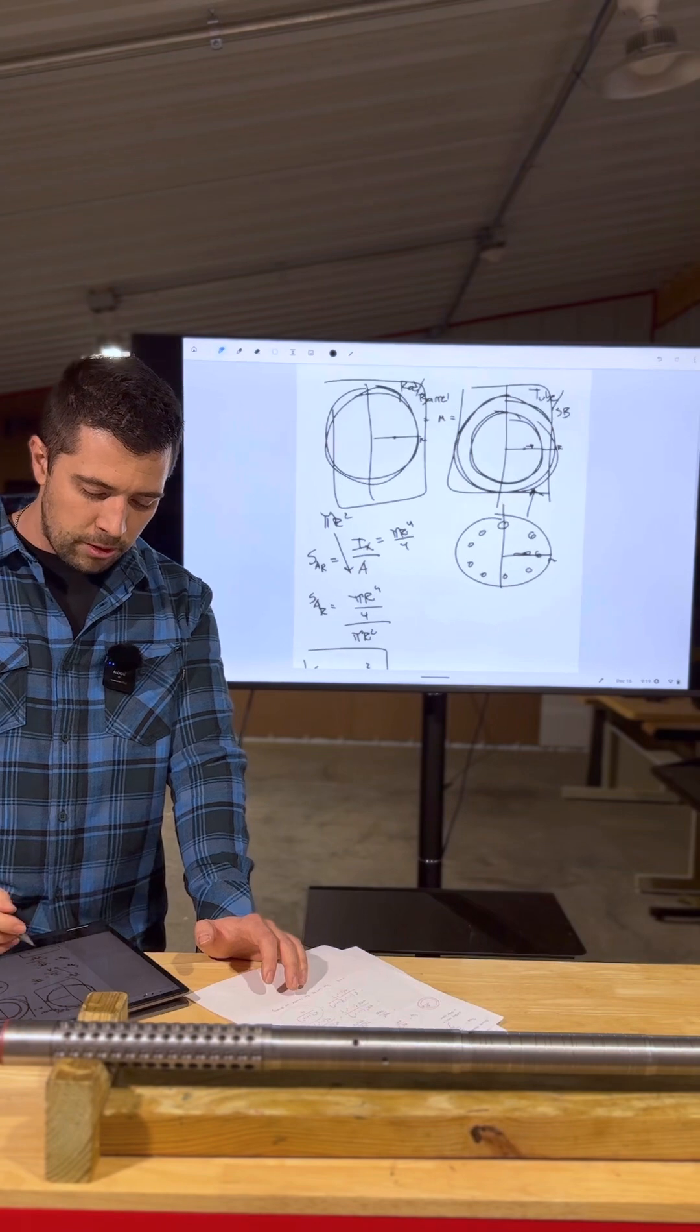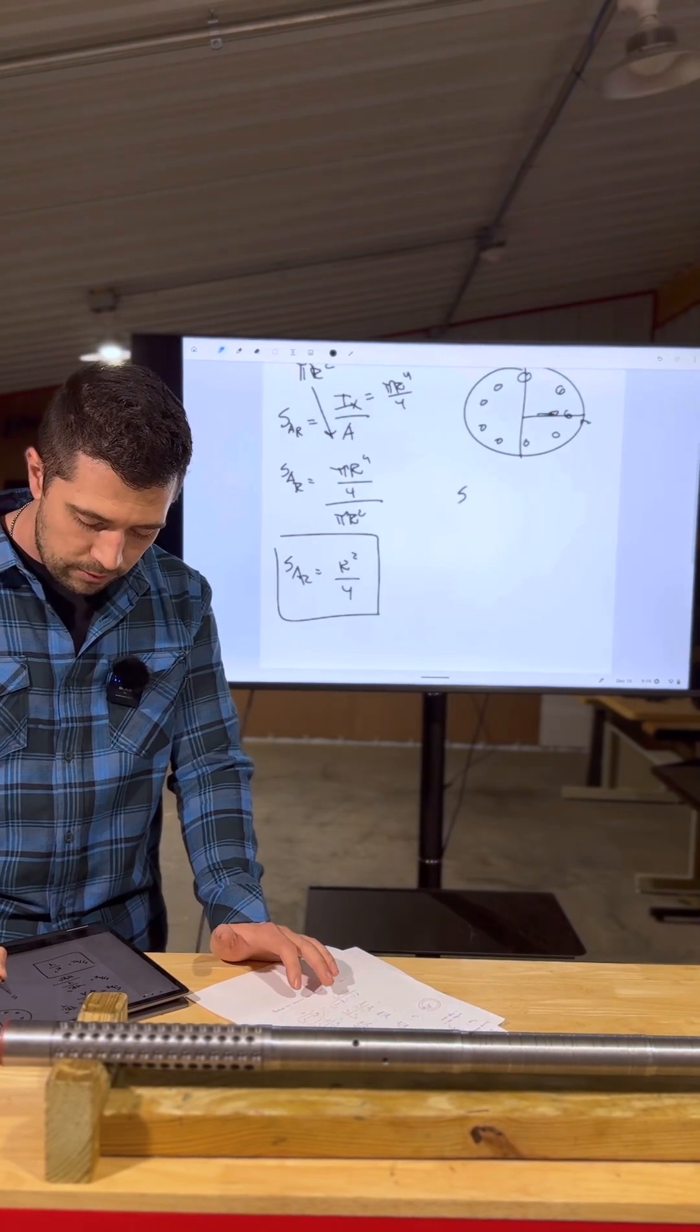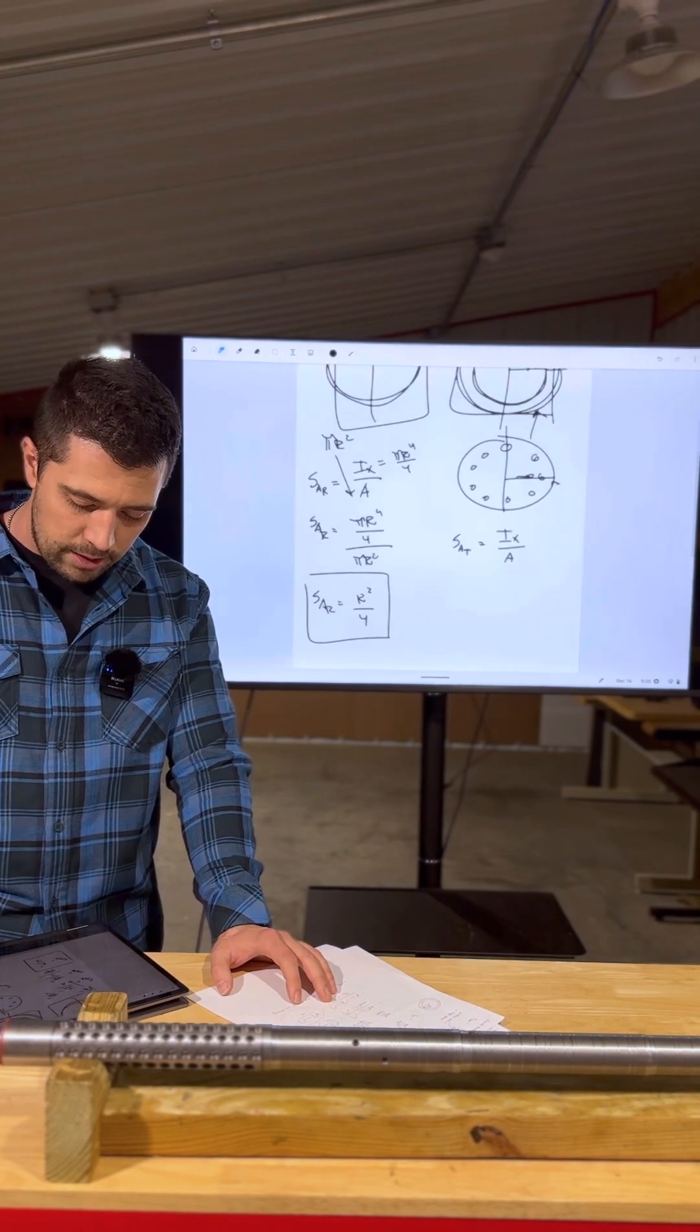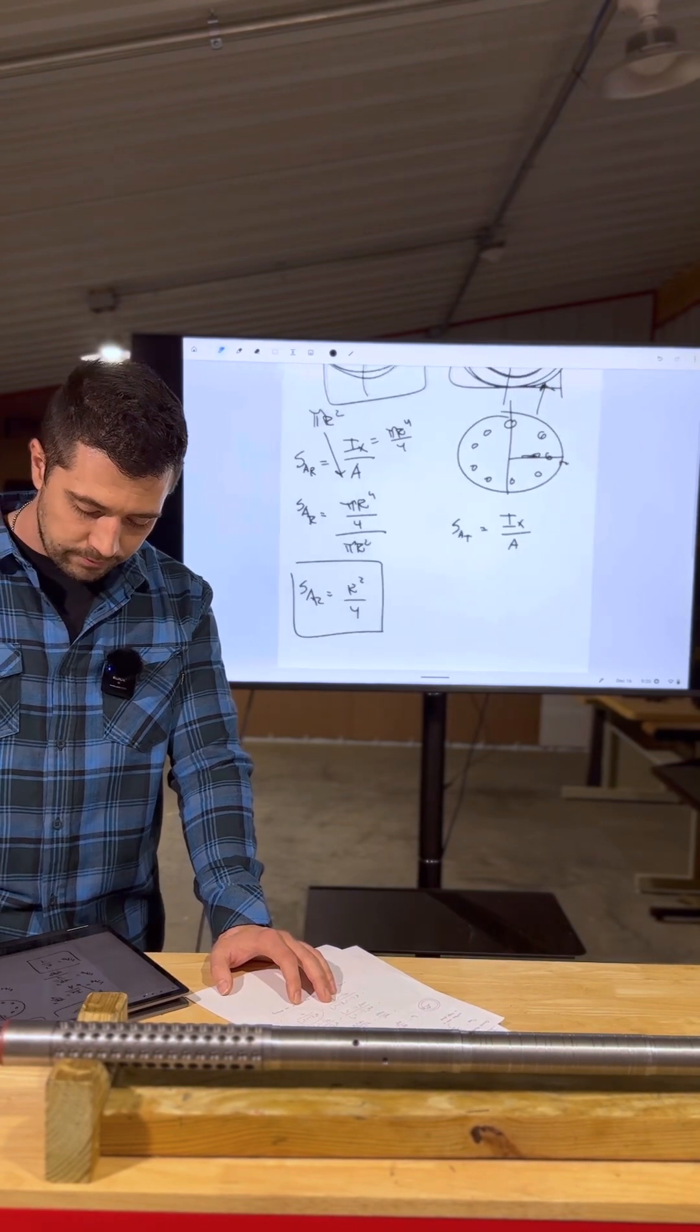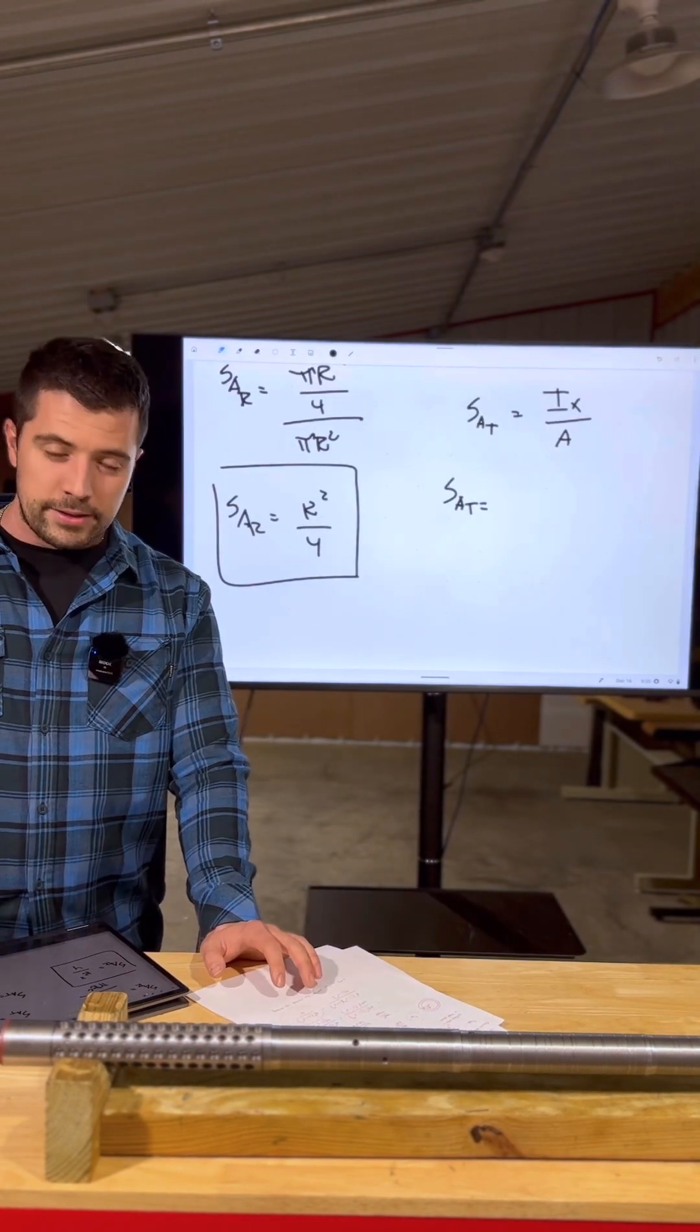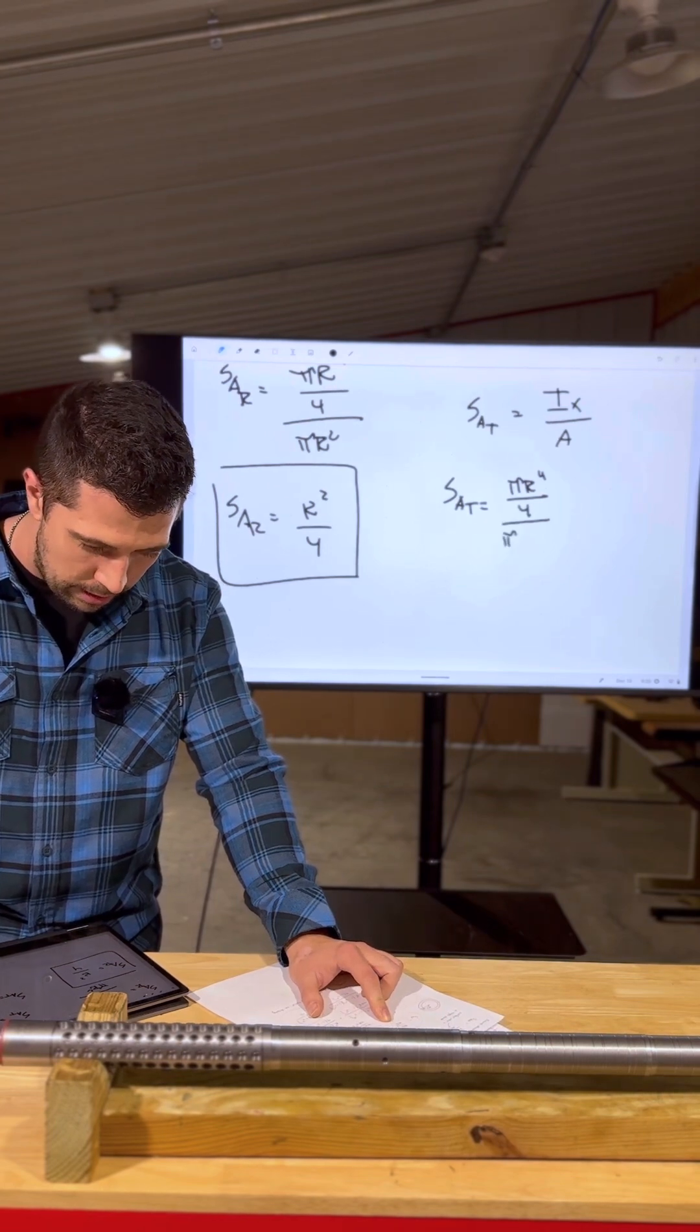So that's the amount of resistance per area unit for a rod, aka a barrel. Now do that same thing with a tube. We have the moment of resistance per unit area of a tube is equal to IX over area. And again, we have a difference of big OD versus small ID. So we can write this as, had a momentary technical error, apologize for that. We can rewrite that as πR to the fourth over 4 divided by πR².